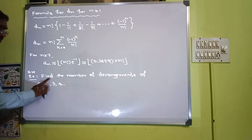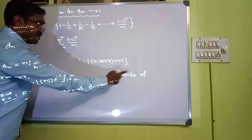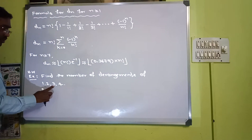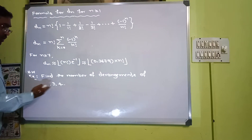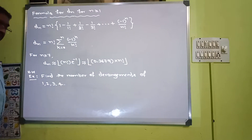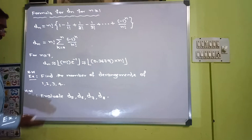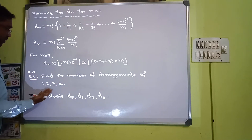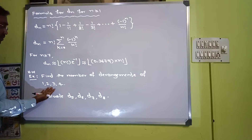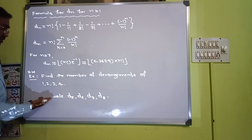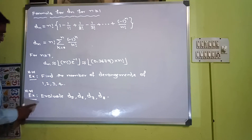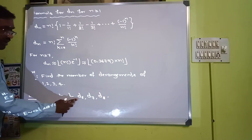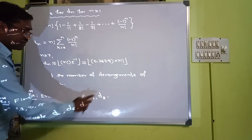For example, find the number of derangements of 1, 2, 3, 4. And as a second example, evaluate D5, D6, D7, and D8.